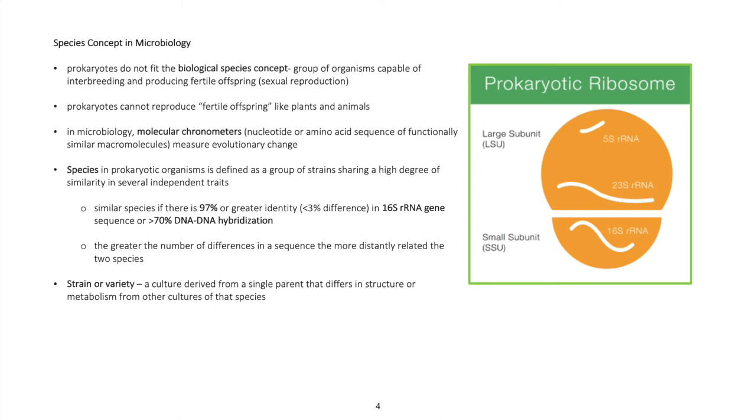Species concept in microbiology: Prokaryotes don't fit the biological species concept - a group of organisms capable of interbreeding and producing fertile offspring through sexual reproduction. Prokaryotes cannot reproduce fertile offspring like plants and animals. In microbiology, molecular chronometers - nucleotide or amino acid sequence of functionally similar macromolecules - measure evolutionary change.